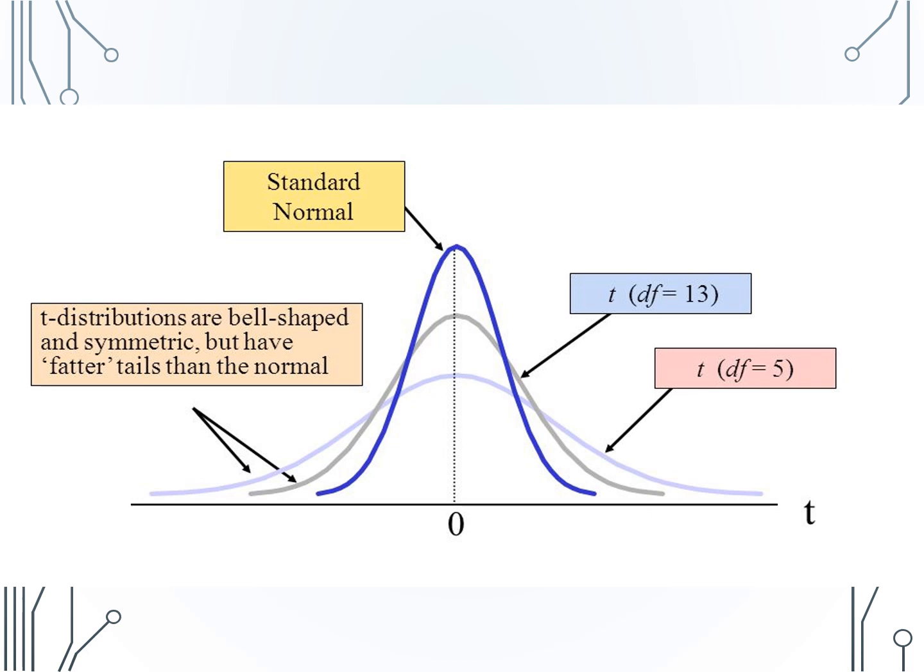In fact, a t-distribution with infinite degrees of freedom actually is the standard normal distribution. In practice, we will use the ISI theory-based applet to complete a theoretical t-test for a single mean. There is a video explaining how to use the theory-based single mean applet.